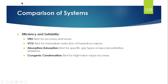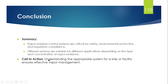Comparing based on efficiency and suitability: VRU is best for recovery and reuse of vapor; VCU is best for immediate reduction of hazardous vapor; absorption and adsorption are suitable for specific types of gas or low concentration emissions; and cryogenic condensation is best for high concentration heavy vapor streams. In conclusion, the vapor emission control system is critical for safety, environmental protection, and regulatory compliance. Different systems are suitable for different applications depending on the concentration and type of vapor emission.